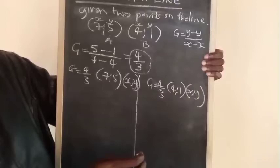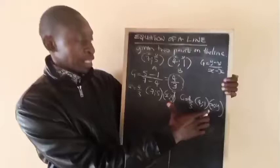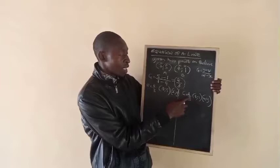Remember what we did in our previous lessons. When we wanted to get the gradient, we had one point. When we wanted to get the equation, we had one point.